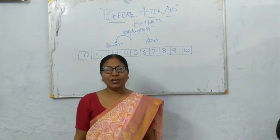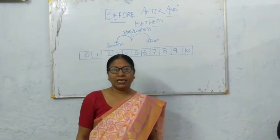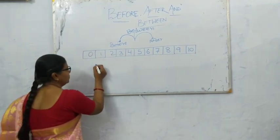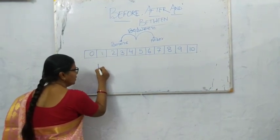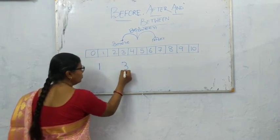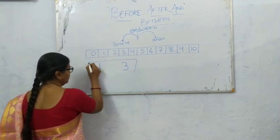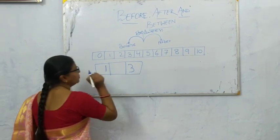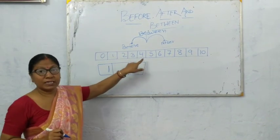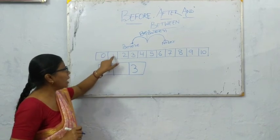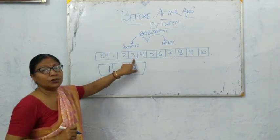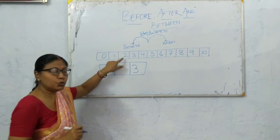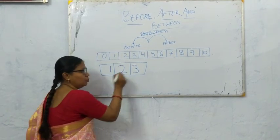Now we will see which number comes in between two numbers. 1 and 3 — see the number strip. Which number comes in between 1 and 3? The number is 2.